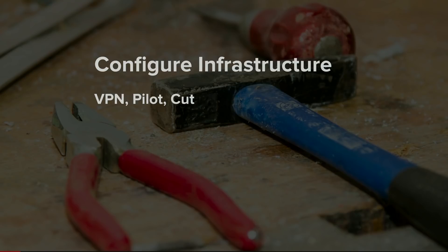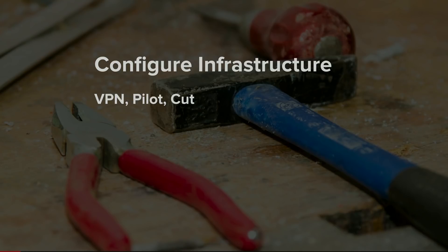Configuring the infrastructure is also pretty simple. If you've already got a VPN, you're in good shape — just make sure you're doing the health checks, you're tied into your identity provider, and you're doing two-factor authentication. Setting up pilot networks so people can test their workflows and verify things work. And then on the day of the cutover, putting the blocks in place — host-to-host blocks, network-to-network blocks, and removing any potential whitelists in your applications and adding firewall ACLs.